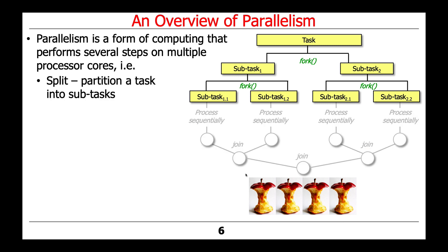The way that things work in parallelism is you have three primary steps. The first step is the splitting step. What you do when you split is you take some original task and you subdivide it or fork it into a bunch of subtasks. This decomposition or partitioning of a task into its representative subtasks is typically done in a recursive manner — you start with the top-level task, then fork it into two subtasks, and then each of those subtasks gets recursively forked into smaller subtasks.